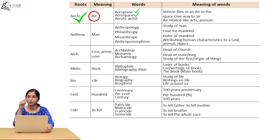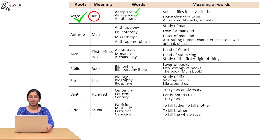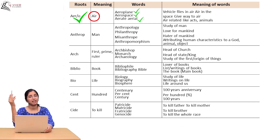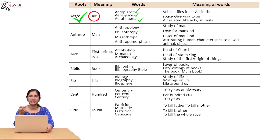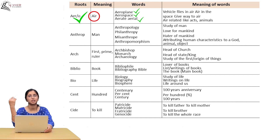Aerial means air-related — like aerial animals: birds, insects, mosquitoes — animals that fly. So 'aero' is the root word, and from it we get: aeroplane, aerospace, aerate, aerial. If you know the meaning of the root word 'aero', you can automatically understand the meaning of the complete word.